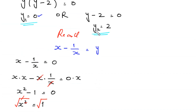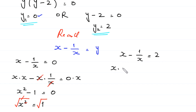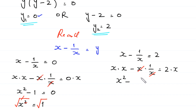Now to find the other two values of x, we put the second value y equals 2 into the equation. So x minus 1 over x equals 2. Multiplying both sides by x gives x squared minus 1 equals 2x. Moving 2x to the left side: x squared minus 2x minus 1 equals 0.